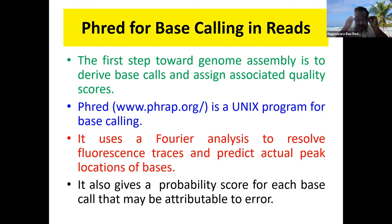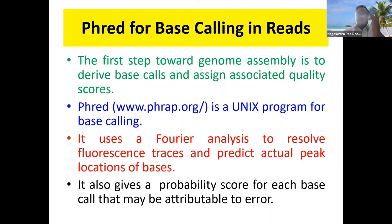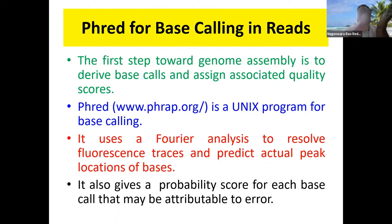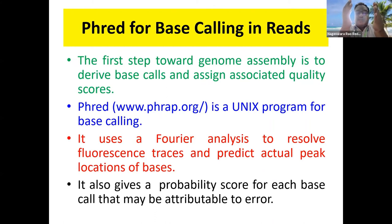PHRED first derives the base, then looks at the quality of the base at that step. It actually follows a method known as Fourier analysis, which is a statistical model based on probability and simulation. Fourier analysis is used by PHRED to call a base, to assign a score, and to determine whether the trace is accurate.